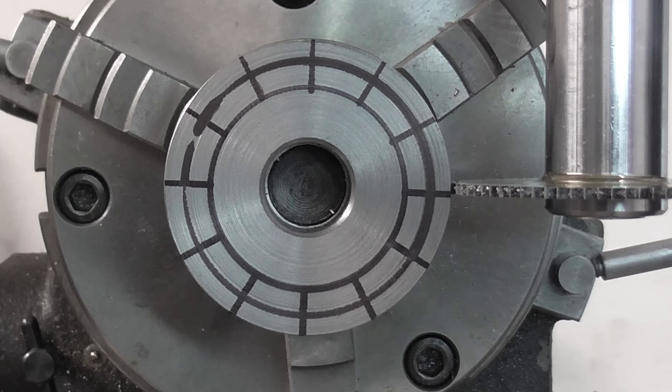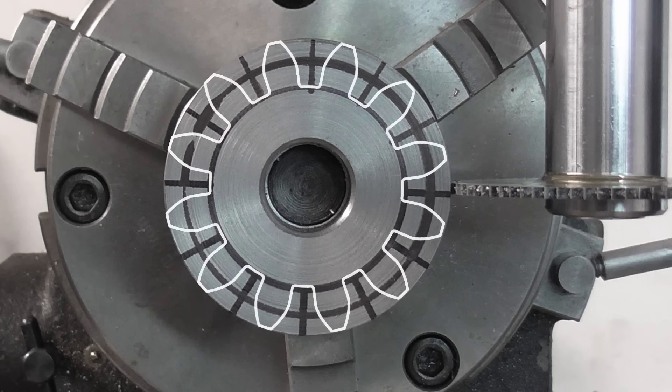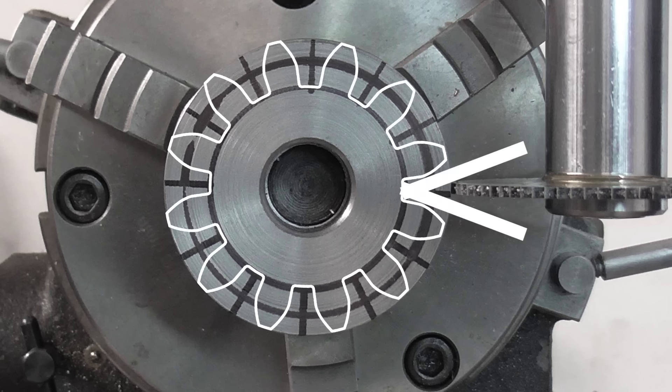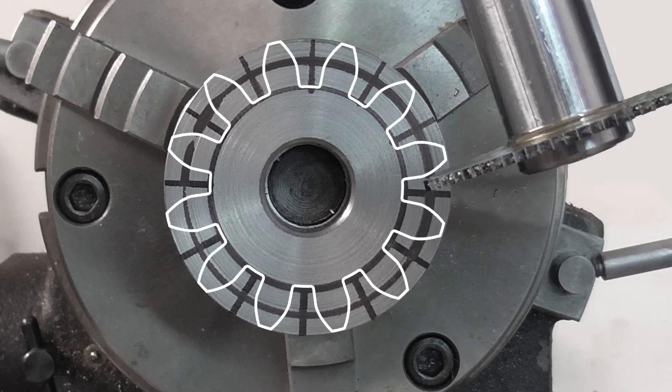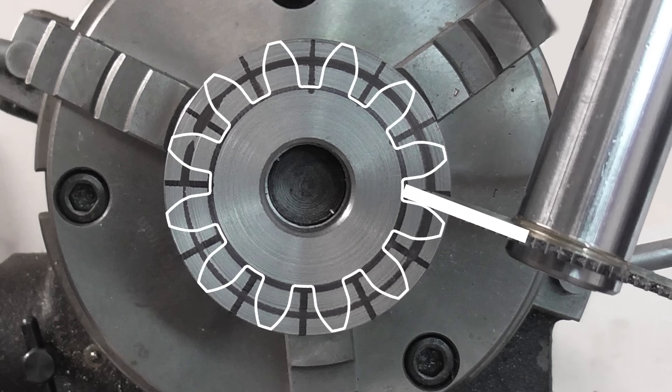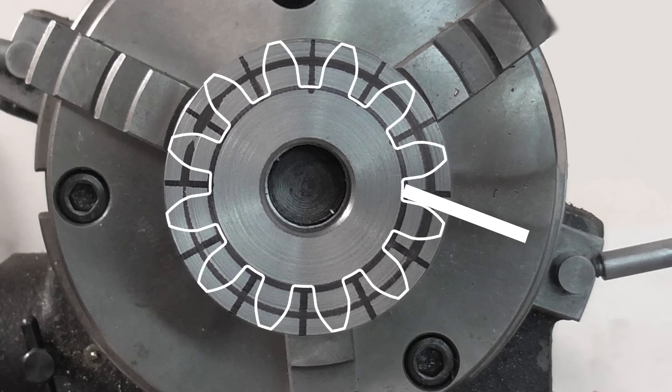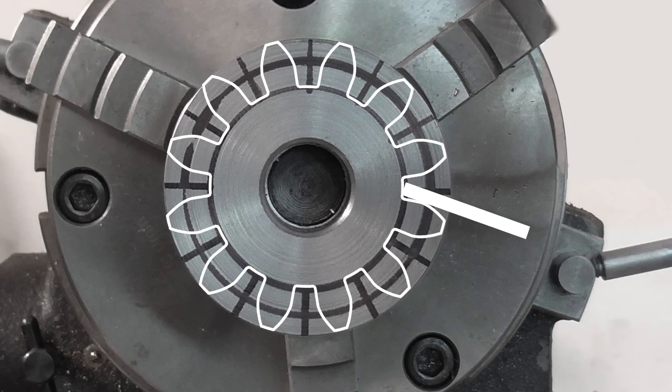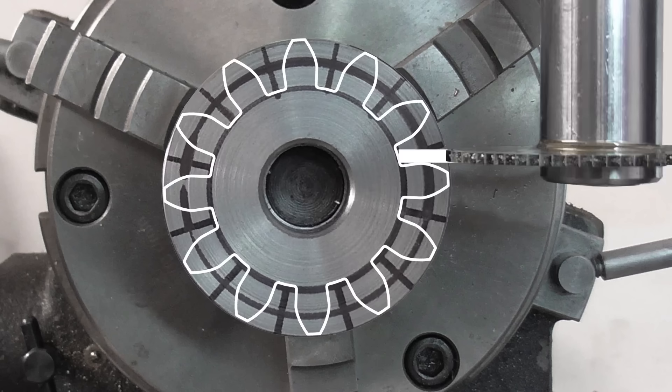The first two cuts are going to be made at the pressure angle of the gear. In this case 20 degrees. I could tilt the head of the milling machine to do this. But I don't need to. I can just rotate the gear instead, making all the cuts horizontal. This is far easier and more accurate than tilting the head.